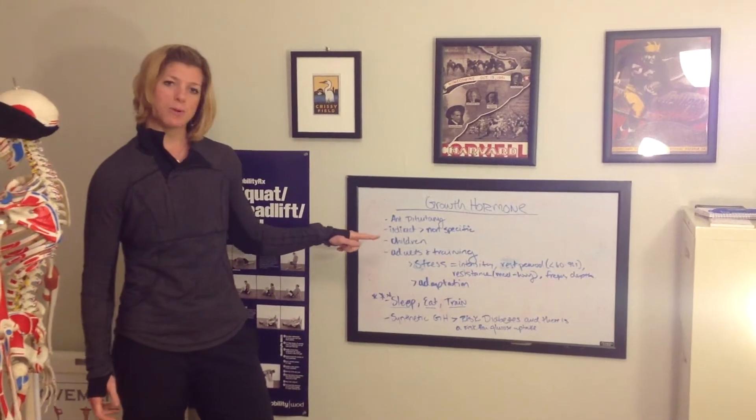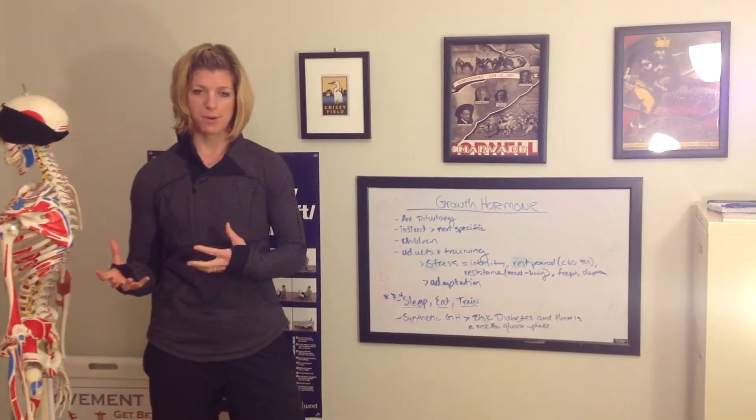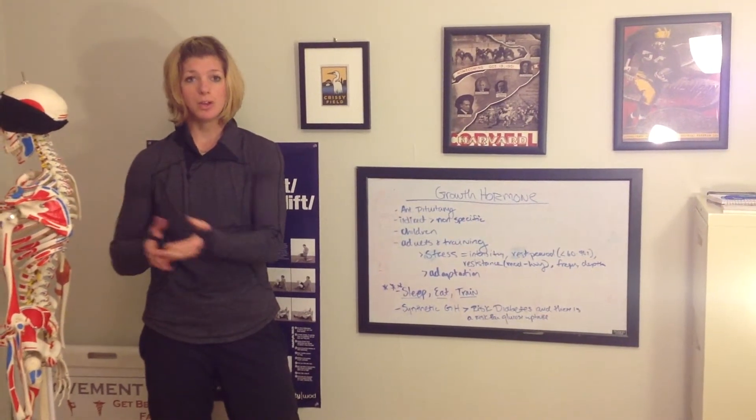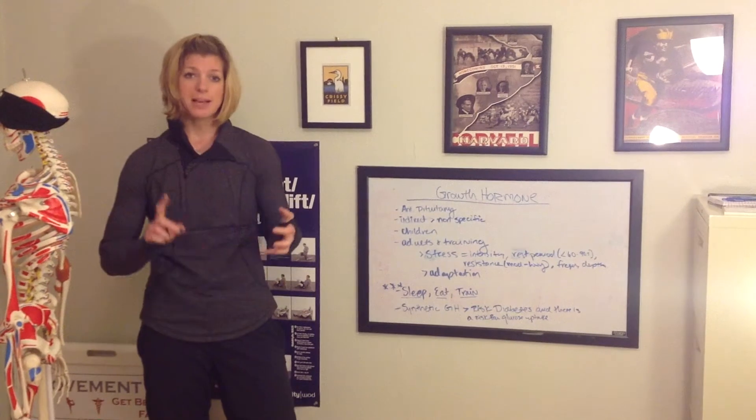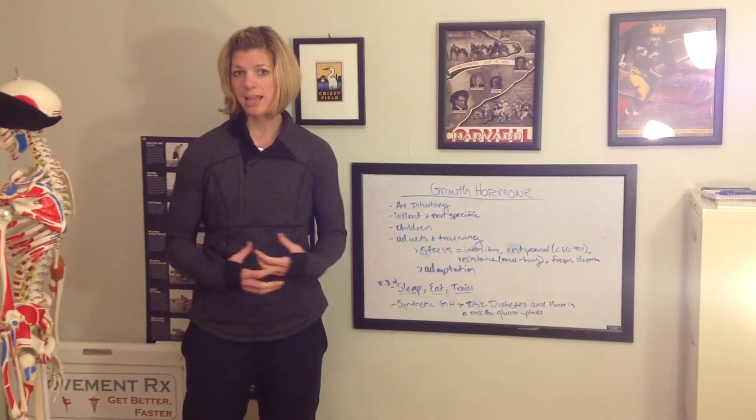And the thing about this hormone is that it's an indirect, non-specific hormone. So when it's secreted, there's not a specific tissue it goes to. So it's there to increase muscle mass, it's there to increase connective tissue, it's there to increase the growth of glands in your body.